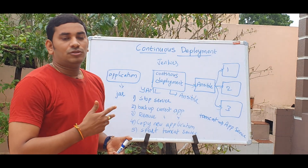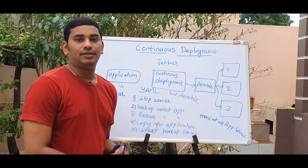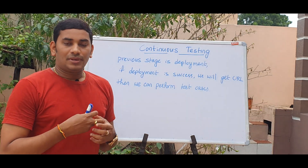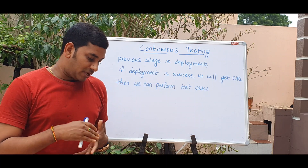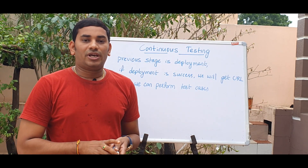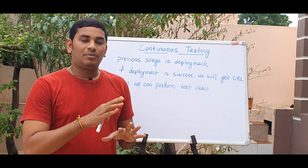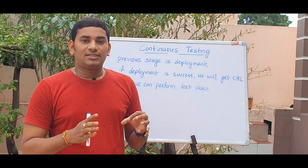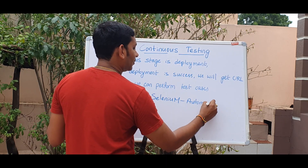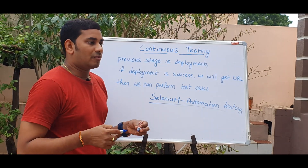This is the whole pipeline — clone and deploy. After that, we continue with testing. After the continuous deployment stage, once your application is successfully deployed, for example your Facebook application at dev.facebook.com, if you open it in the browser, you run test cases: login, sign up, post, security, etc. This is the testing procedure. Selenium is mostly used for automation testing in Java projects.